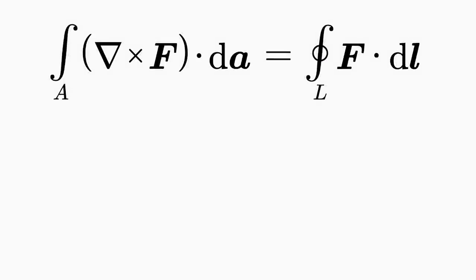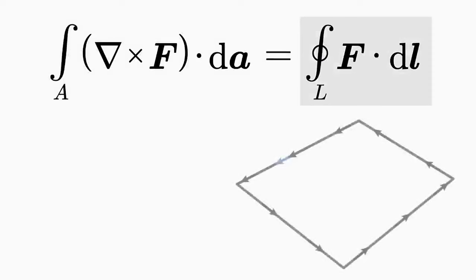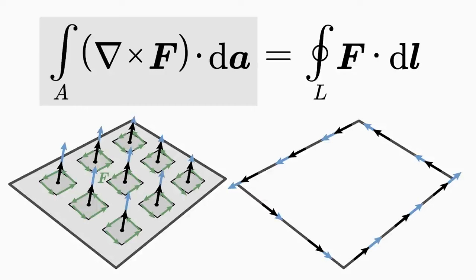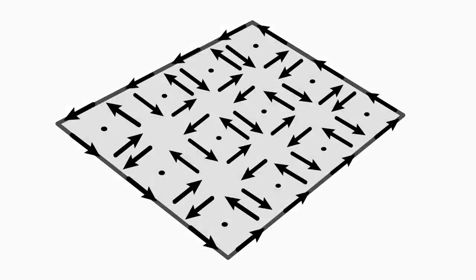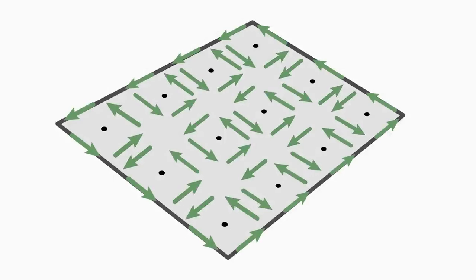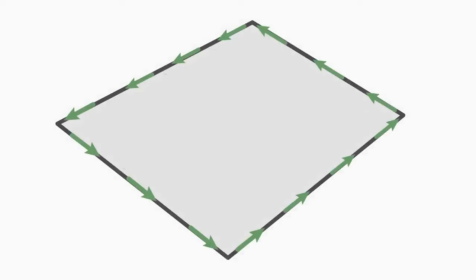Let's summarize the statement of the Curl Integral Theorem. On the right-hand side, the vector field f is summed up along a line L, and thus the rotation of the vector field around the enclosed surface is considered. On the left-hand side, the curl of the vector field f is summed up at each individual point within the surface. Both sides should be equal according to the theorem. The curl integral theorem thus states that the total curl of a vector field f within a surface A corresponds to the rotation of the vector field f along the edge L of that surface. It is somehow clear that the rotation of the vector field inside of the surface cancels in the summation, and only the rotation of the vector field along the edge L remains.